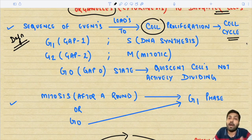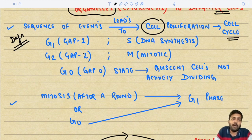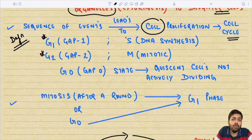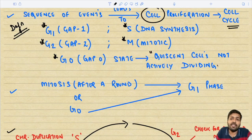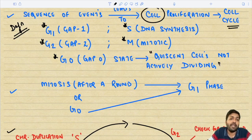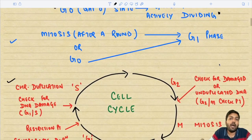The phases of the cell cycle are: G1 — Gap 1; S — DNA Synthesis phase; G2 — Gap 2; M — Mitotic phase. G0 stands for Gap 0 state, which is where quiescent cells are not actively dividing.